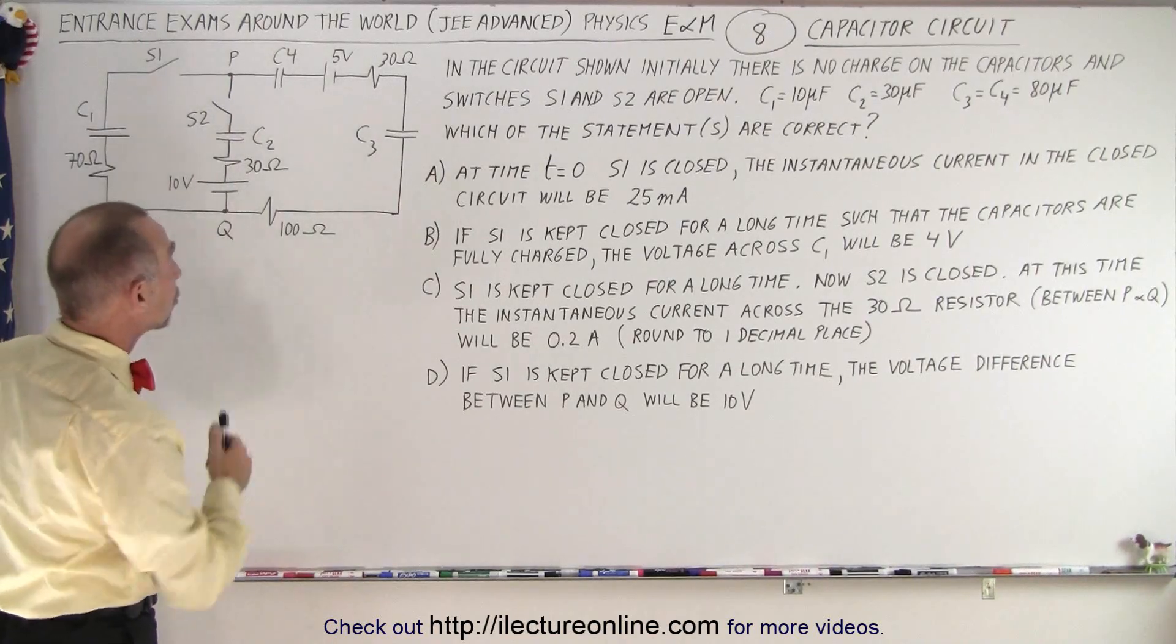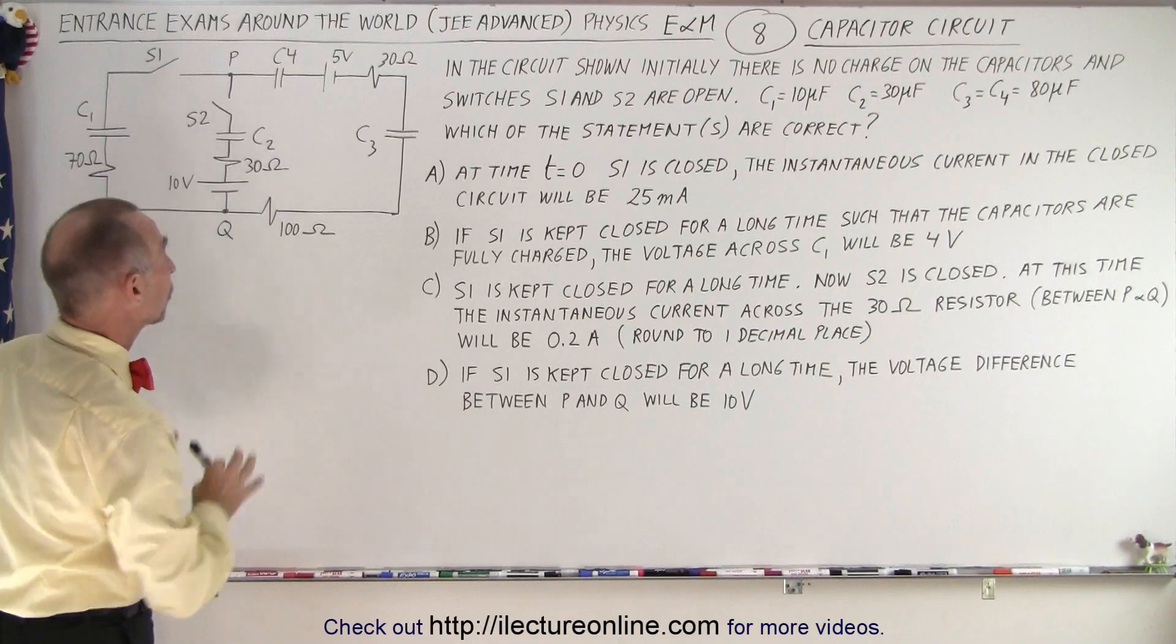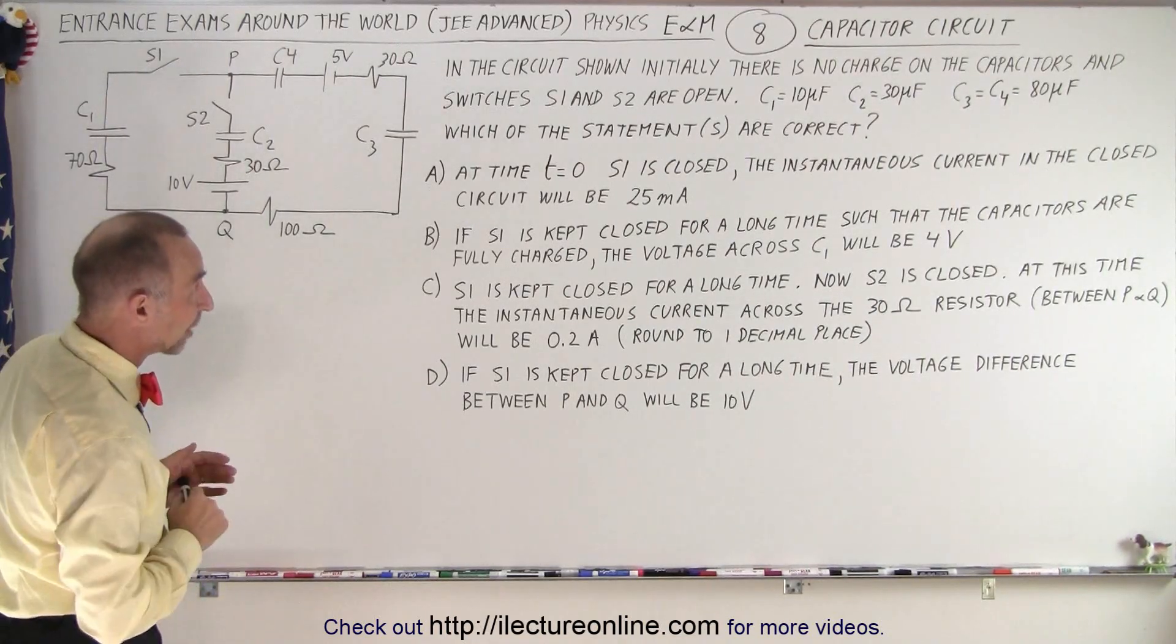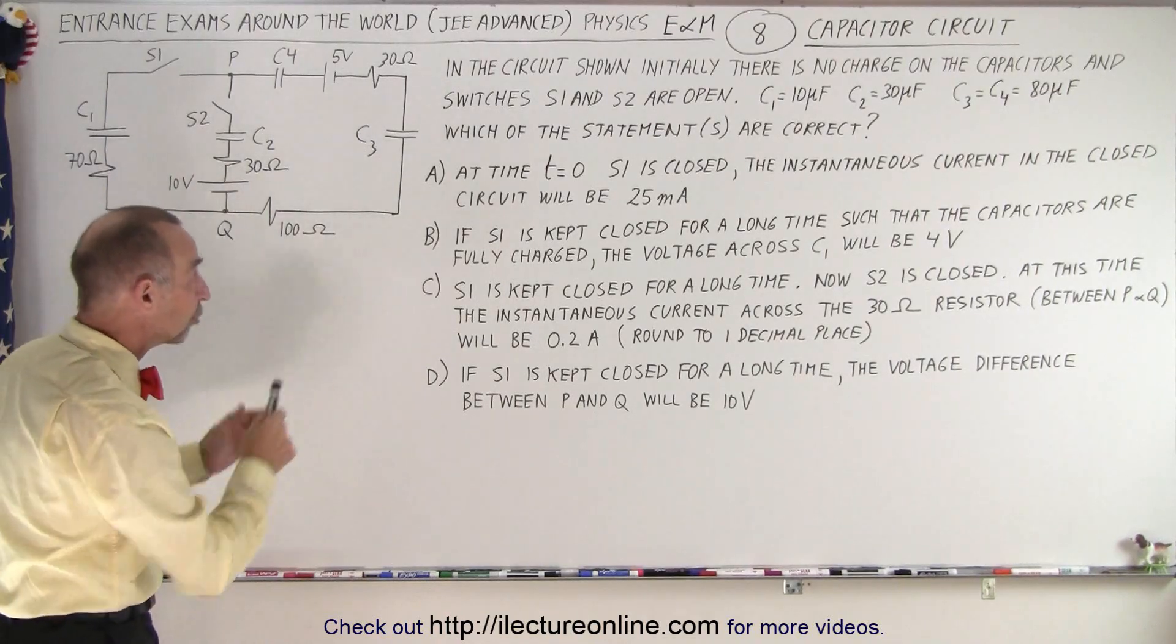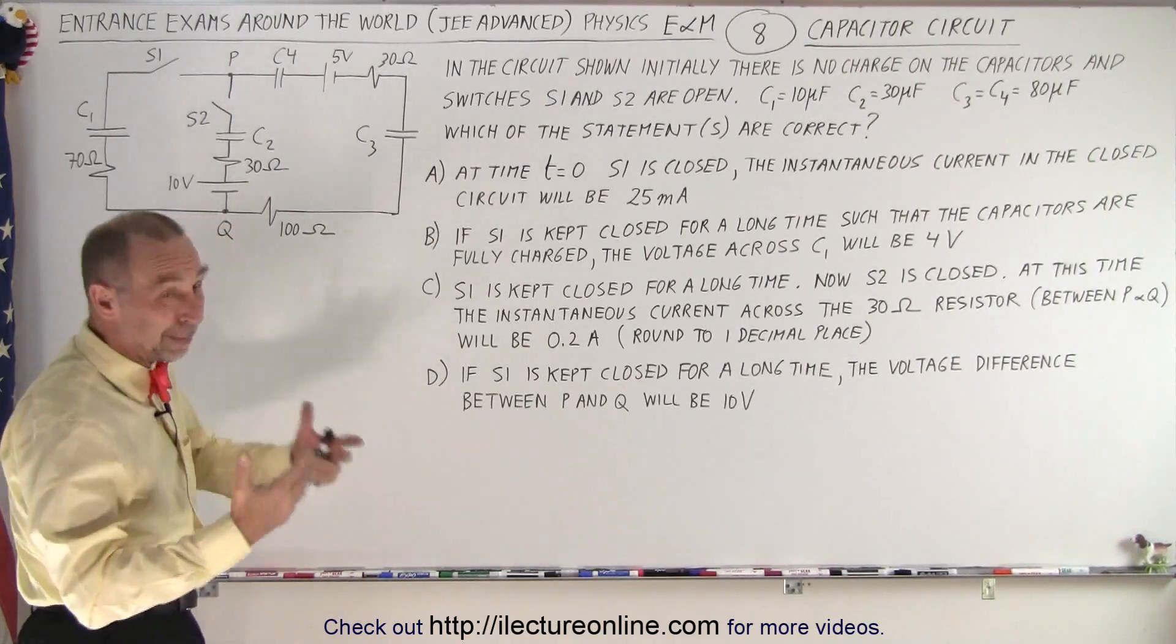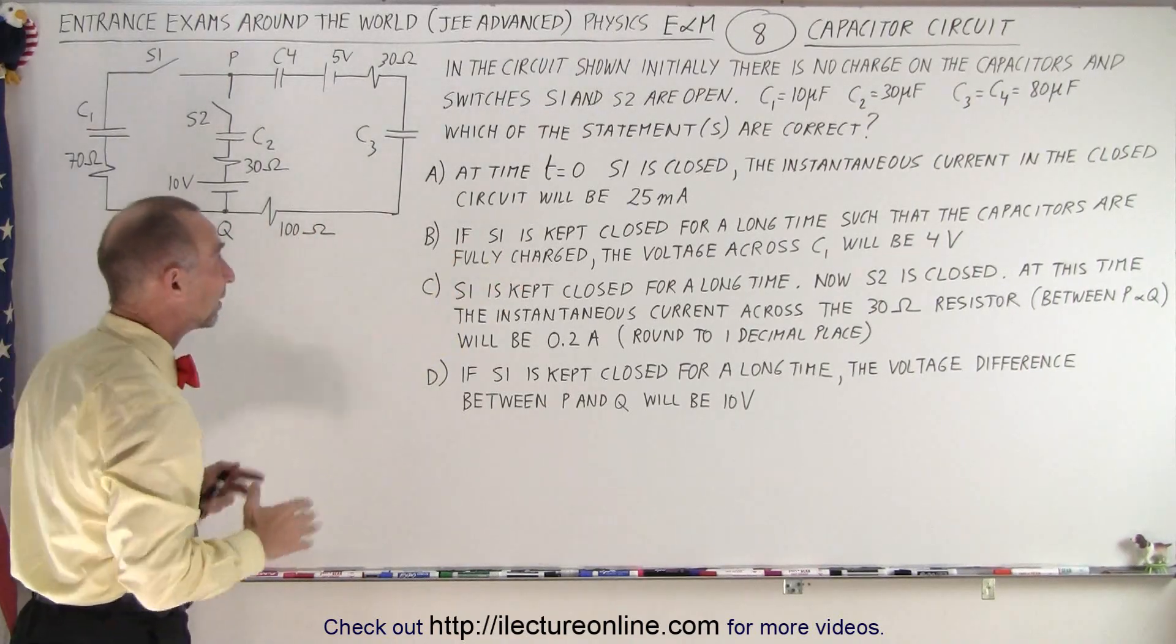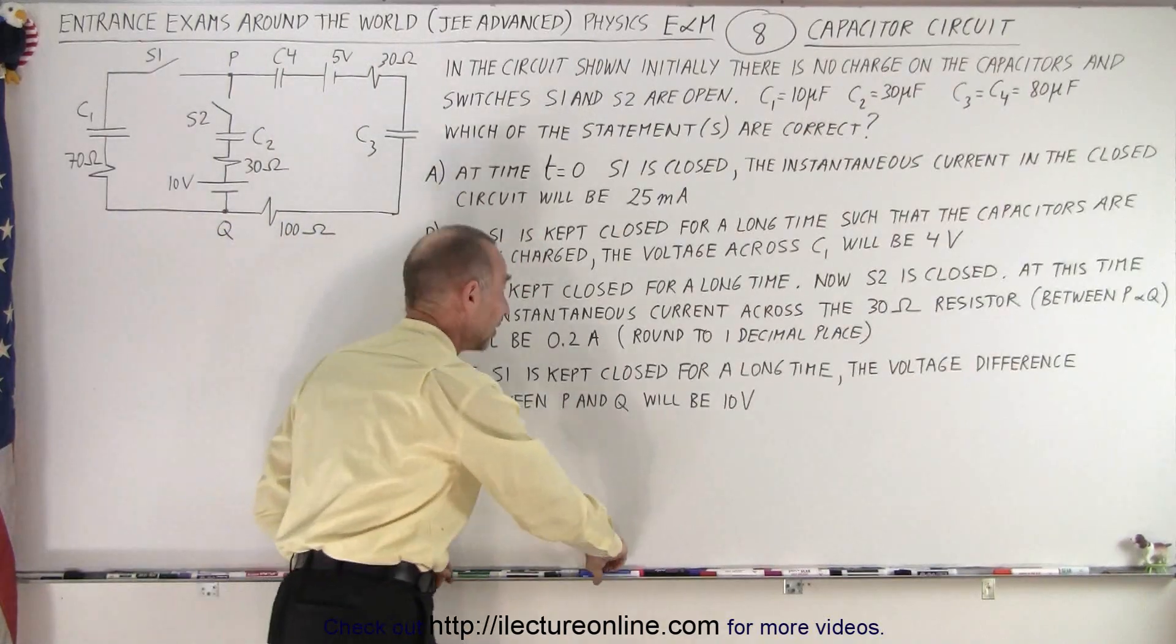It says that in the circuit shown initially, there's no charge on the capacitors and both switches S1 and S2 are open. They give us the values of the capacitors, there's four of them, and then they ask us which of these four statements are correct. What I always would prefer that you do is put in the capacitor values on the circuit because if they're like that on the side and on the circuit, it's kind of difficult to deal with.